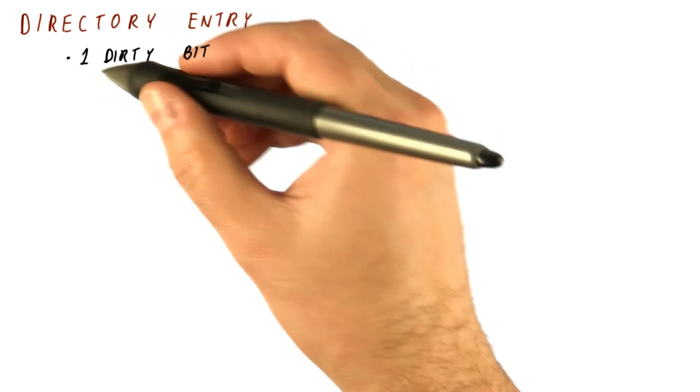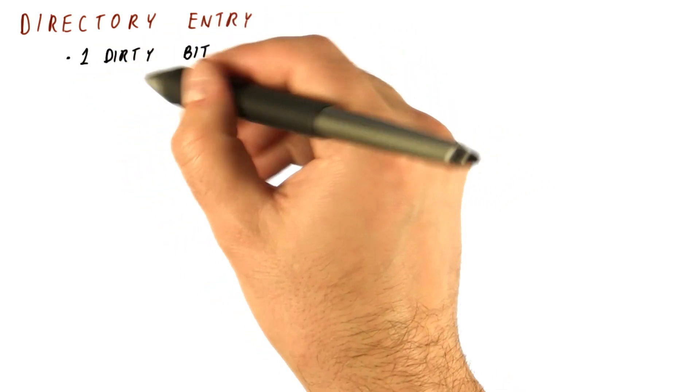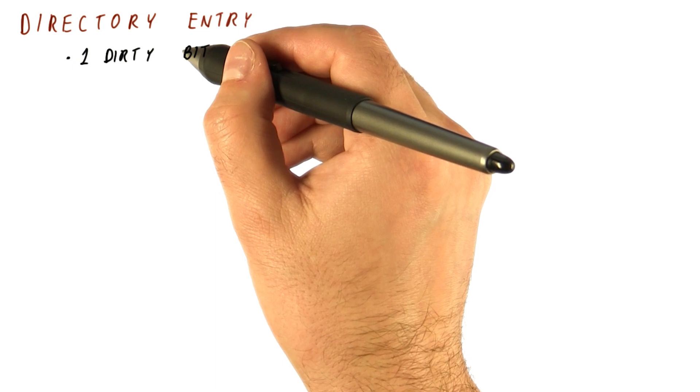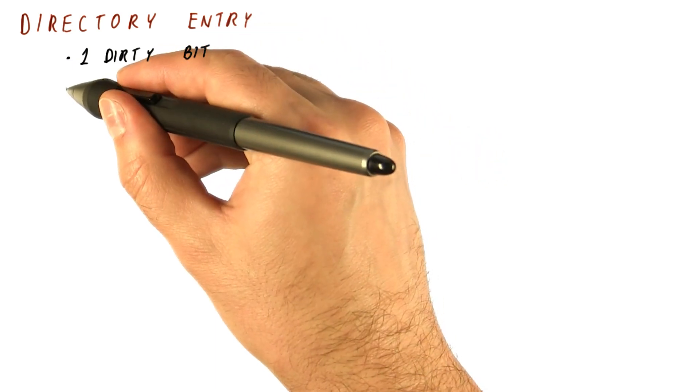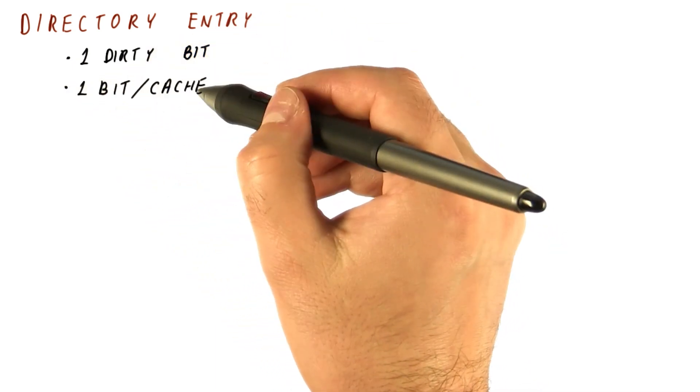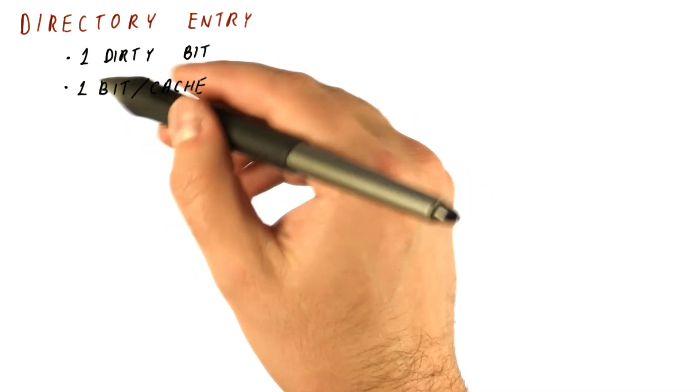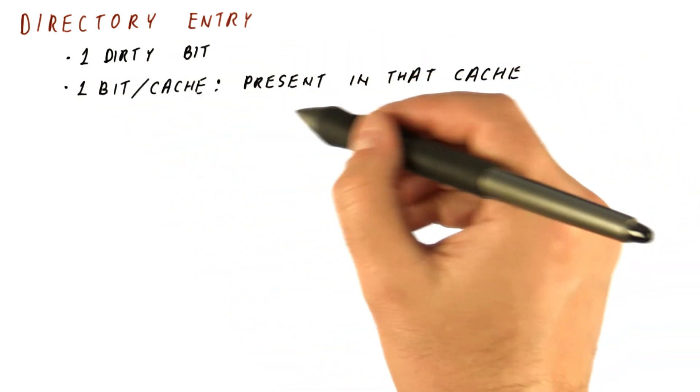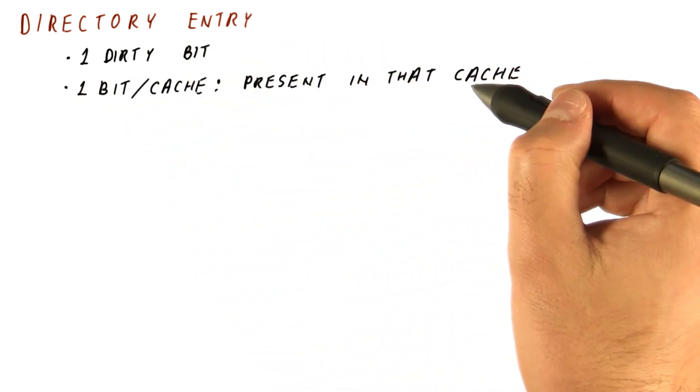The directory entry has one dirty bit that indicates that the block is dirty in some cache in the system. And for every cache in the system, the directory entry has one bit that indicates whether the block is present in that cache.